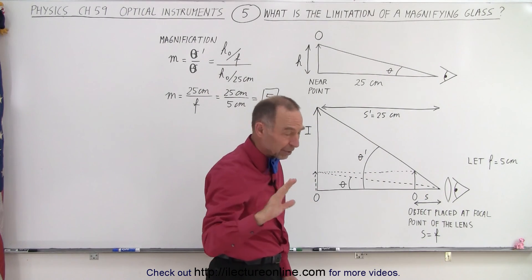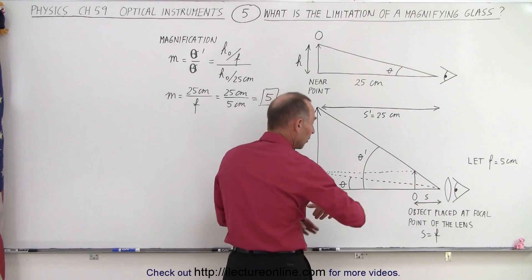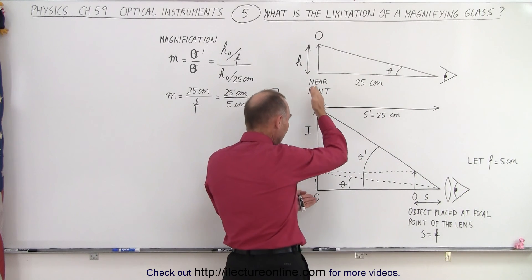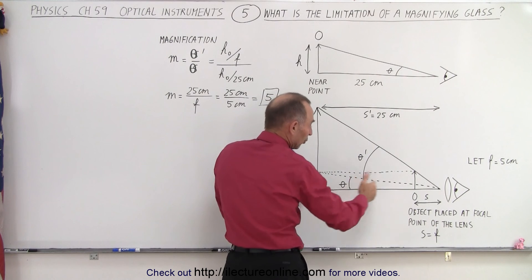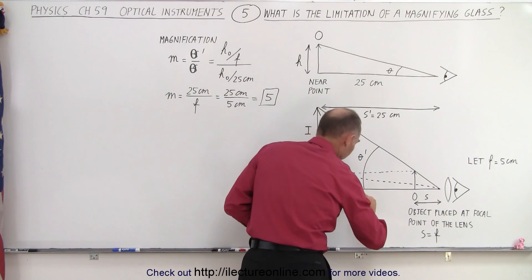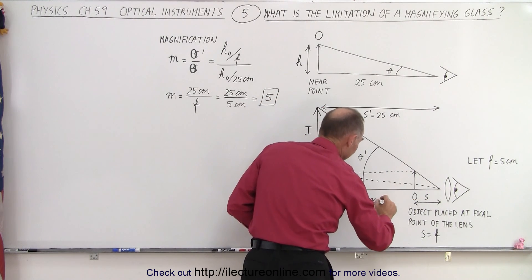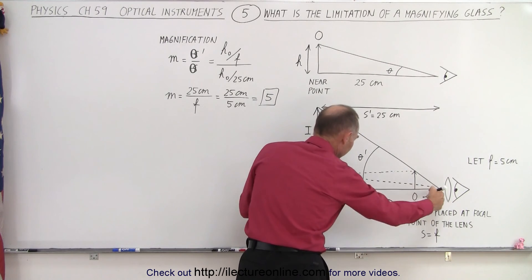That will be the limitation. We'll get into that in just a moment. But it allows us to make an image that is far greater. And if we place that image at what we call the near point, 25 centimeters away. Let's go ahead and indicate that, this is 25 centimeters from there to there.